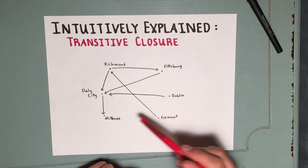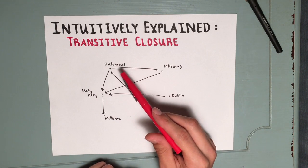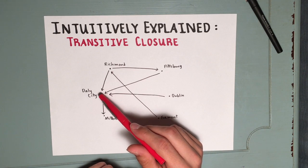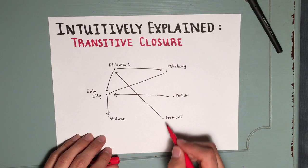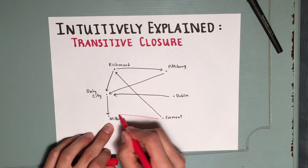So for example, if we want to get from Fremont to Millbrae, we can go Fremont to Richmond, Richmond to Daly City, and then Daly City to Millbrae. For that reason, since it's possible to start in Fremont and end up in Millbrae, we include a new arrow.